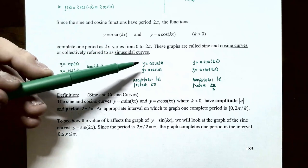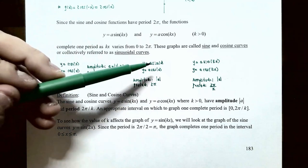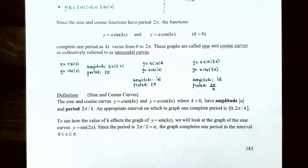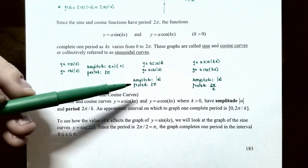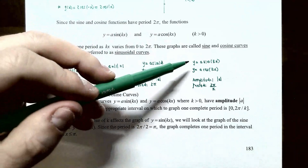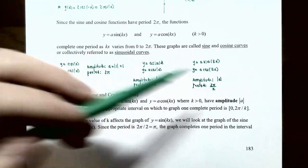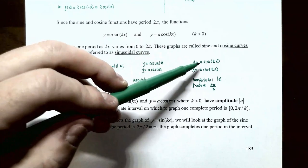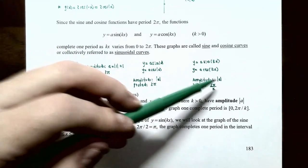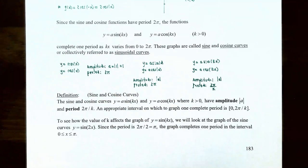If you have y = a·sin(x) or y = a·cos(x), the amplitude is the absolute value of a and the period is unchanged at 2π. However, for y = a·sin(kx) or y = a·cos(kx), the amplitude is |a| but the period changes. The period will now be 2π divided by k, for whatever value of k is being multiplied inside the argument of the sine or cosine function.